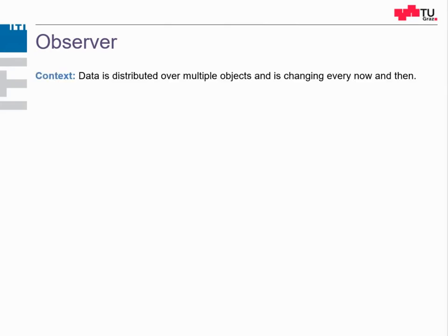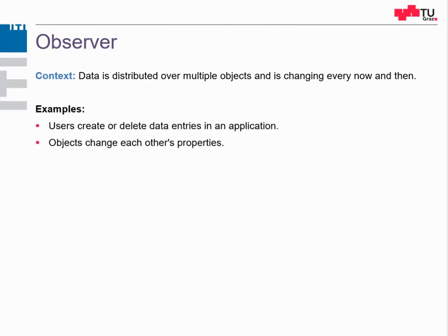What is the context in which the Observer can be applied? We have an application where data is distributed over multiple objects which are changing every now and then. For example, we have an application where users can create or delete data entries or manipulate them. We also have applications where objects change each other's properties, or properties of objects generally change over time.